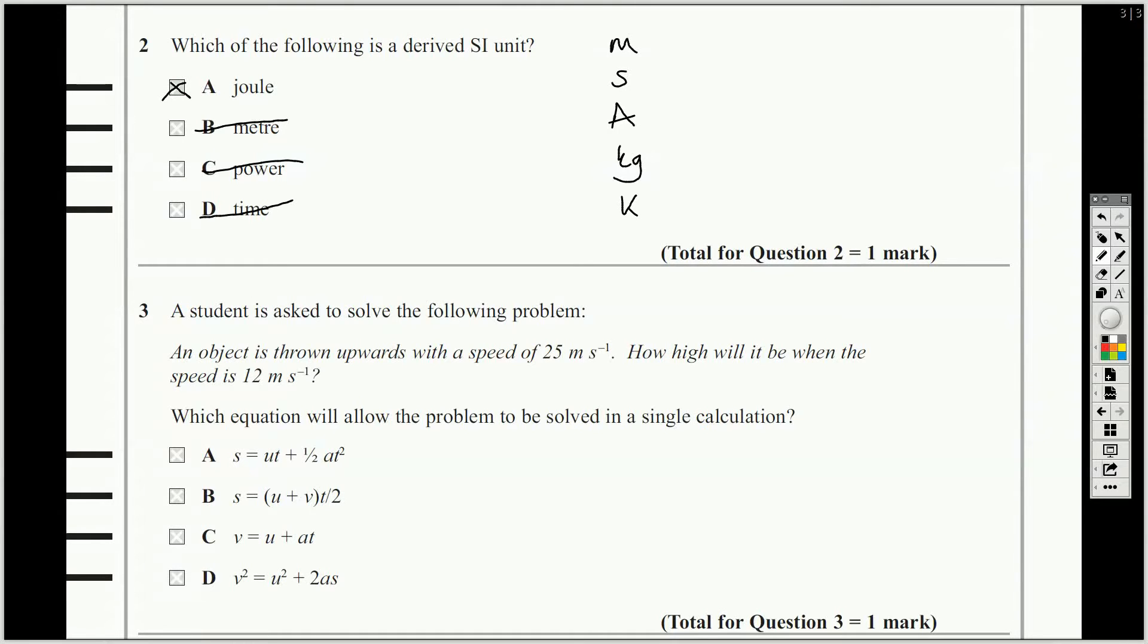A student is asked to solve the following problem: object is going upwards at a speed of 25 metres per second. So that is U, initial. How high will it be when the speed is 12 metres per second? That is V and you need to, you don't actually have to work it out. You just need to choose the equation.